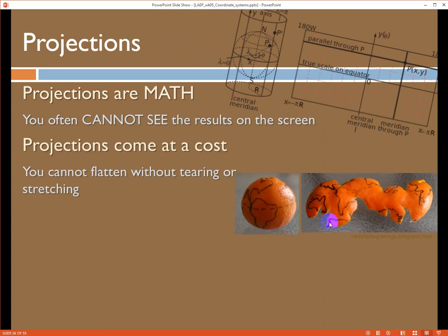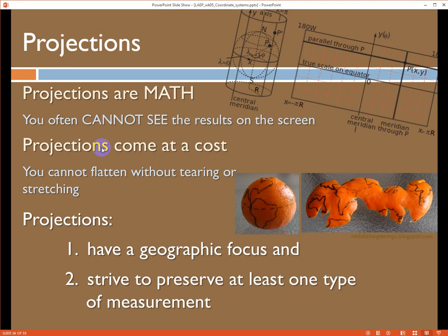Projections come at a cost. So we can't flatten a curved surface without tearing it or stretching it like we saw with the lines of longitude. Pulling them apart and displaying them as parallel, you get a lot of stretching. So you're going to have some sort of distortion when you do this math. And that's just life. So what to keep in mind. All projections have a geographic focus. This is going to depend in large part on the datum or the geographic coordinate system that has helped us define the curved surface. And they're going to strive to preserve at least one type of metric or measurement.